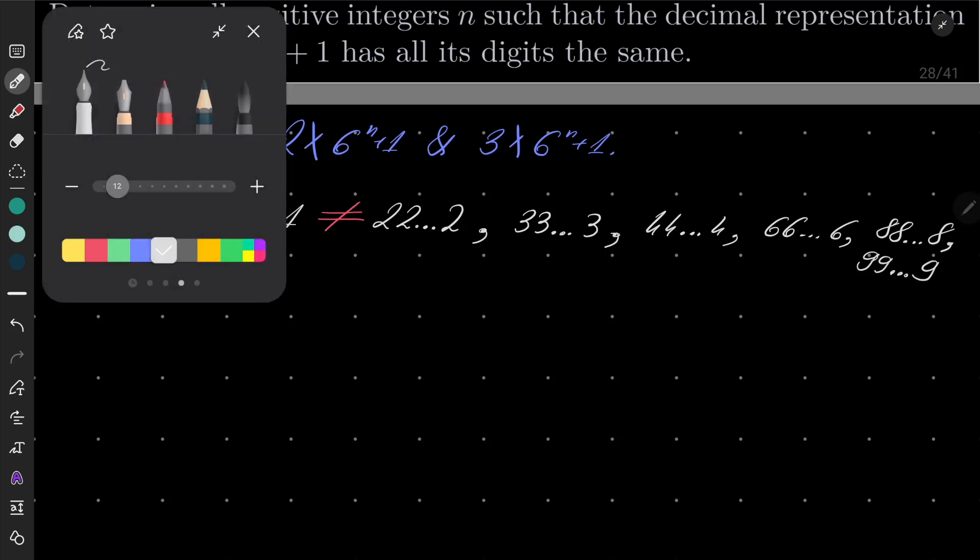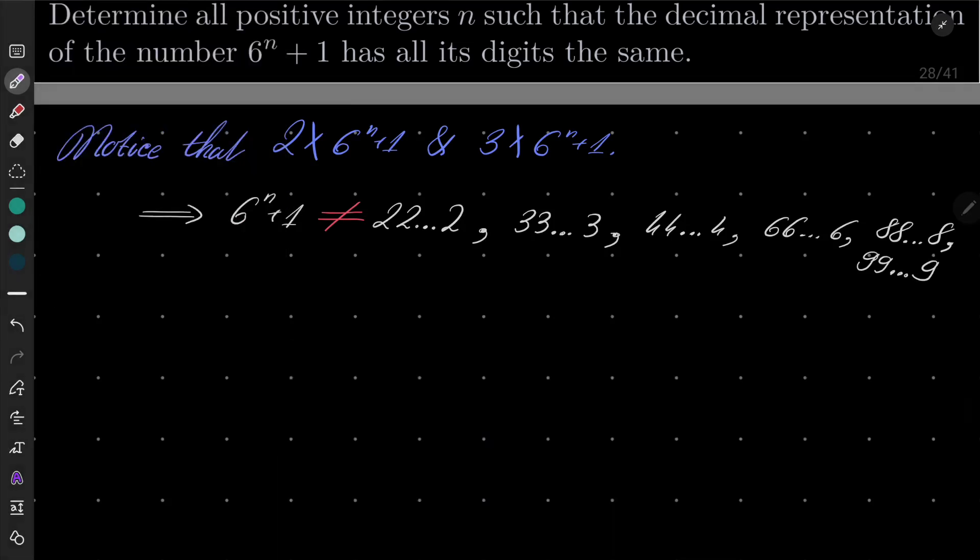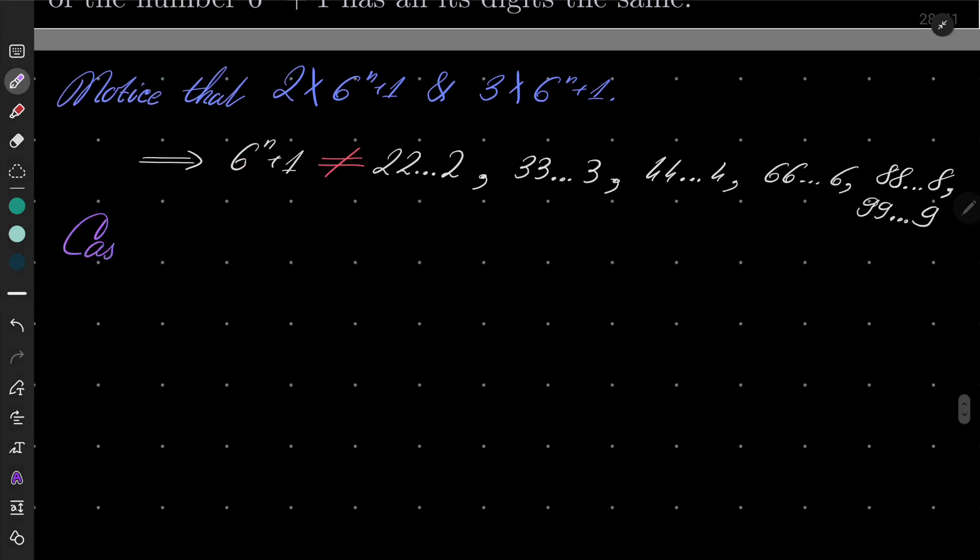Very well. Now let's consider three possible cases. Case number 1. Our number consists of digits 1, let's say k digits 1.